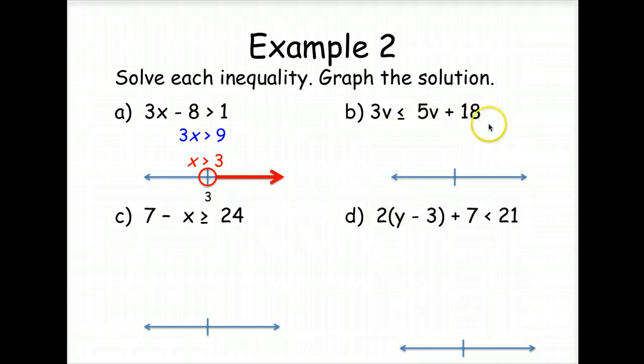How about starting to solve this one? Yes, we're going to subtract 5v from both sides. Now here's where it gets a little tricky. I hope you remember this from Algebra 1. But whenever we multiply or divide by a negative number, we flip our sign. So v is greater than or equal to negative 9, so it's a closed circle, and greater than.